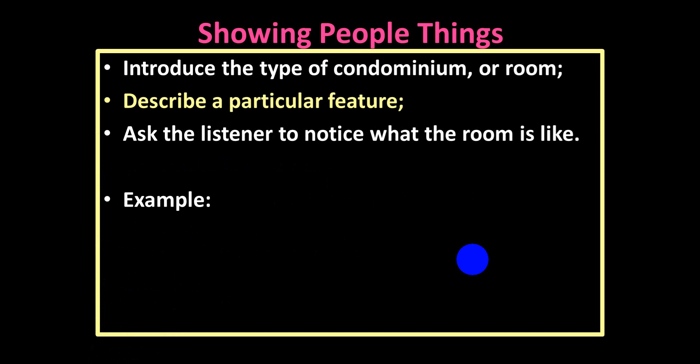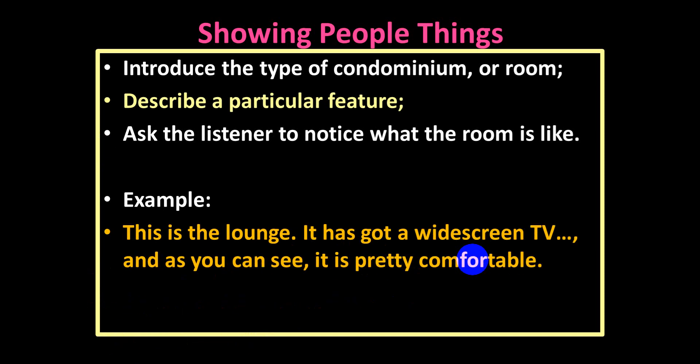For example, this is the lounge. So what is the type of accommodation? It's a lounge. It has got a widescreen TV—describe the particular feature. A particular feature: it has got a widescreen TV. Ask the listener to notice what the room is like, and as you can see, it is pretty comfortable.